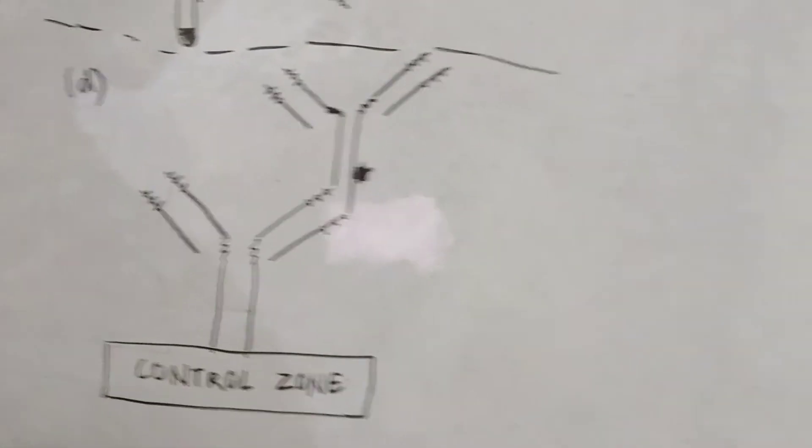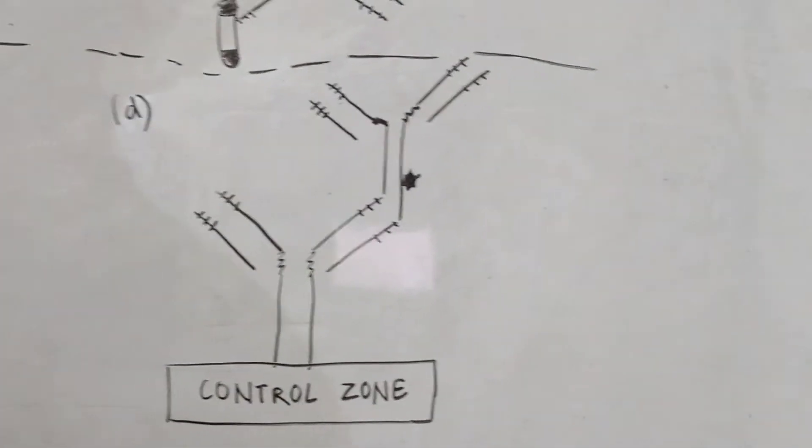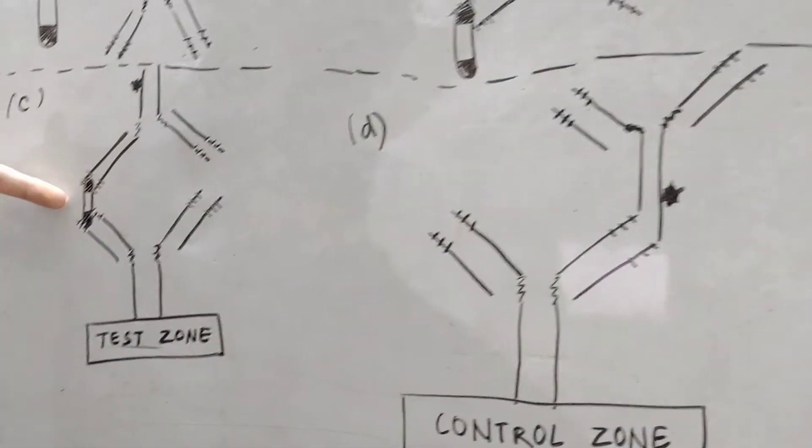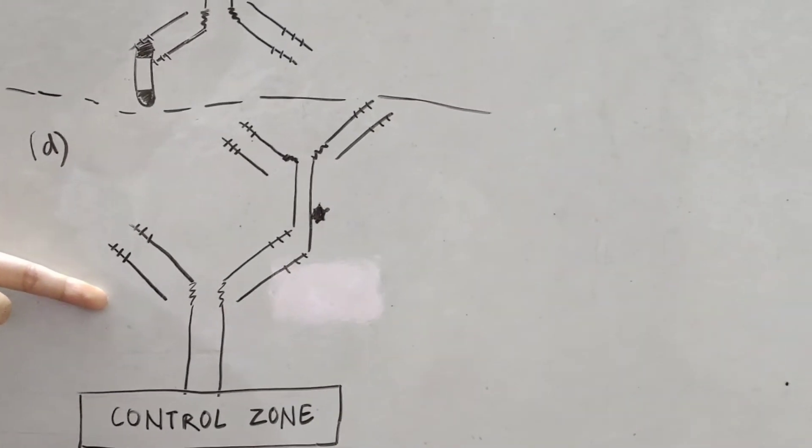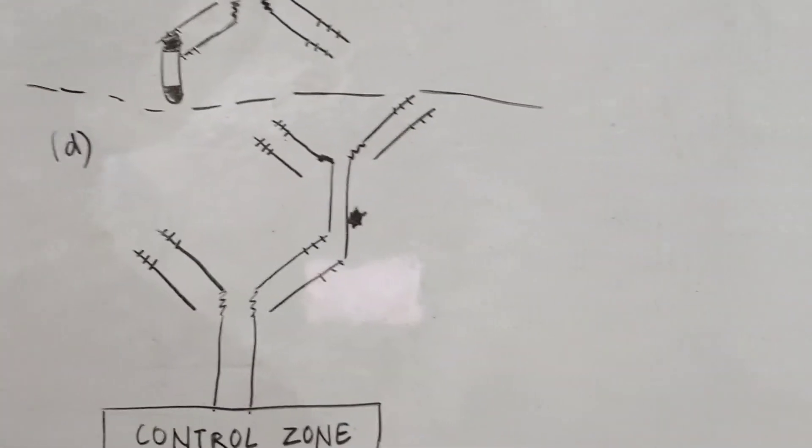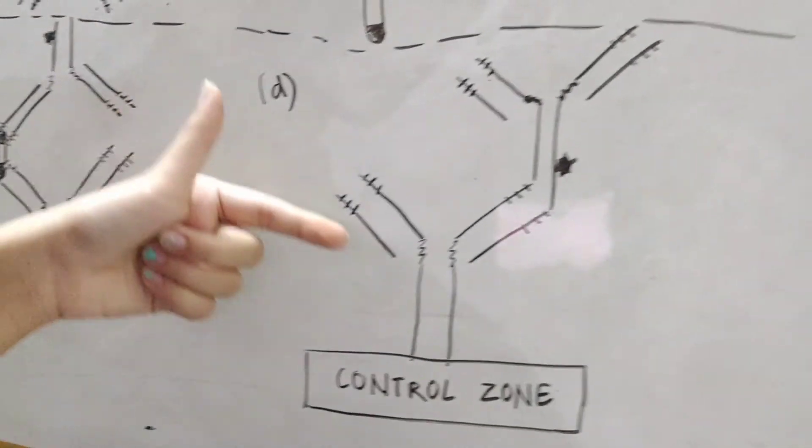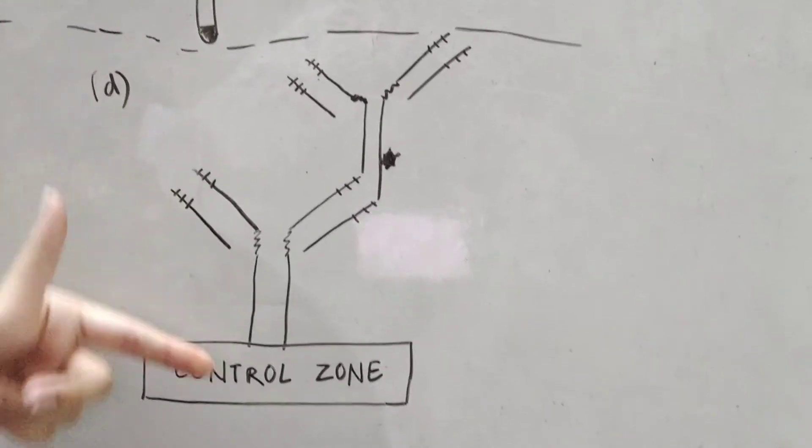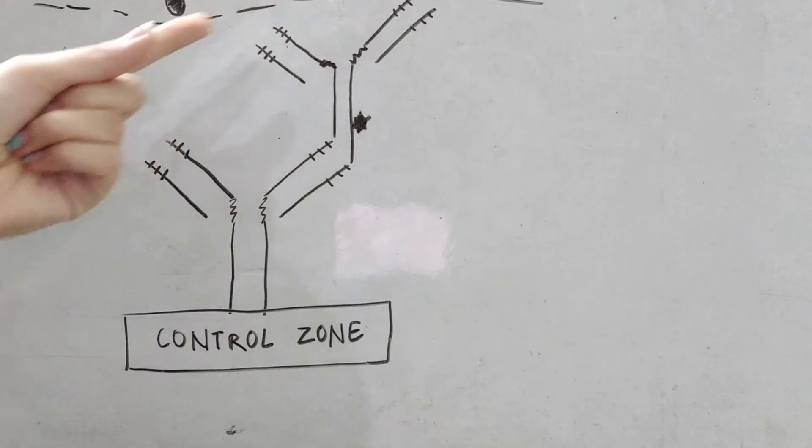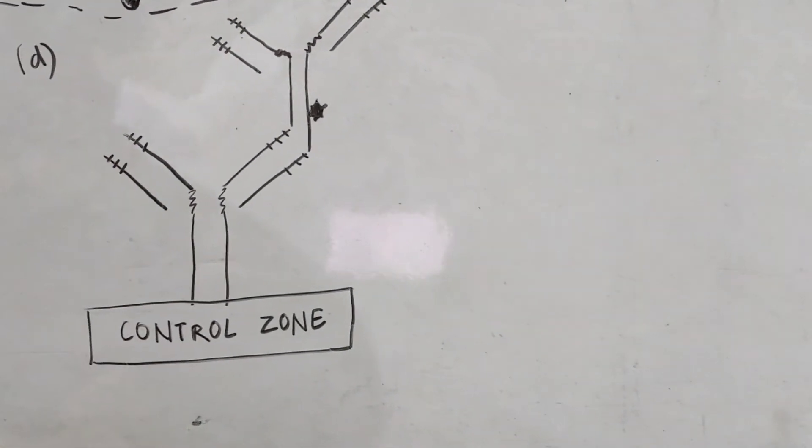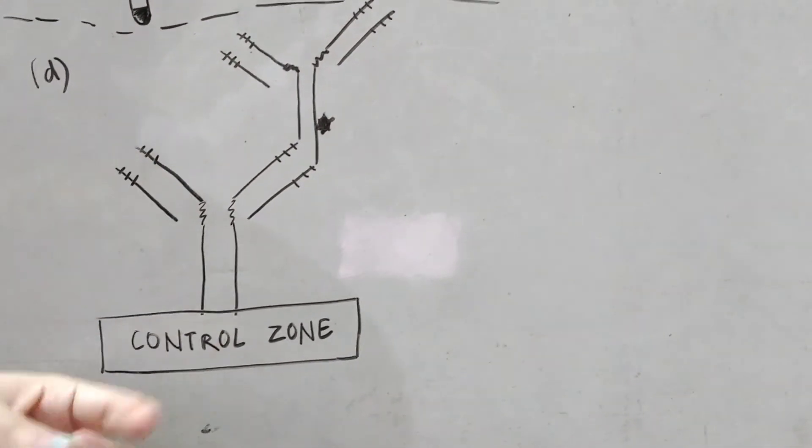Now, we will talk about the control zone. In control zone, the remaining labelled antibodies which are not bound with the antigen bind with immobilized unlabelled antibody. The remaining antibodies which are not bound with antigens bind with the remaining immobilized antibodies at control zone. So, the formation of this structure and detection of this structure indicates the presence of pink line in control zone region.